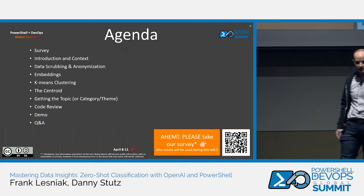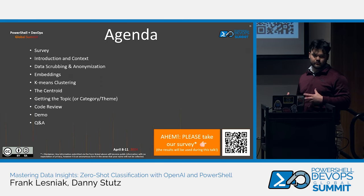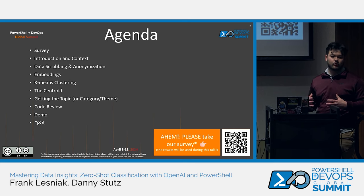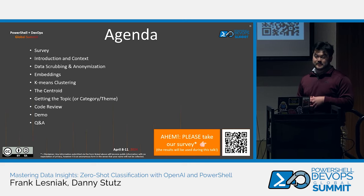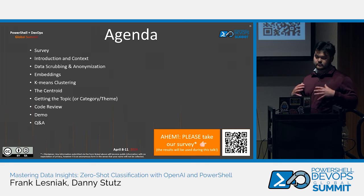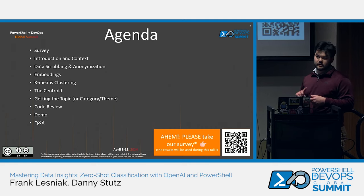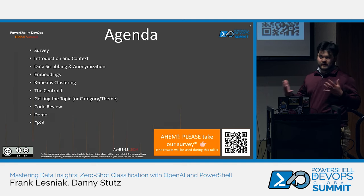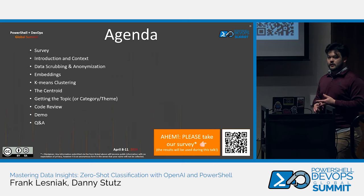For the agenda today: we'll start by going through some of the survey results — collecting them and then doing a live analysis of all the responses during the demo. We'll go through the context and level-set on what brought us here and the use cases. Then we'll get into the data science-y things around scrubbing the actual data and anonymizing it. We'll cover OpenAI embeddings, how we cluster those embeddings, and the centroid around k-means clustering. Then we'll go through getting the topic and do a code review and demo. If this doesn't make sense, that's expected — just stick with us.